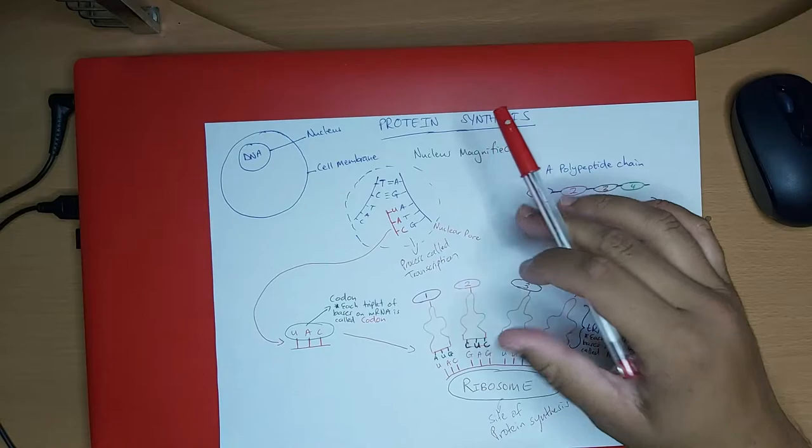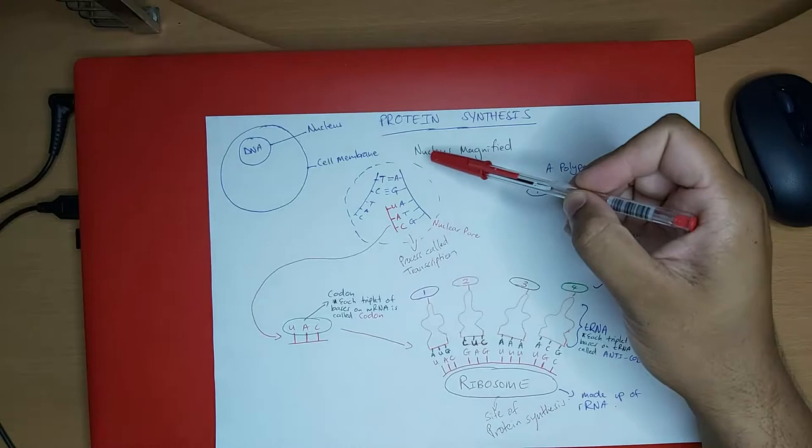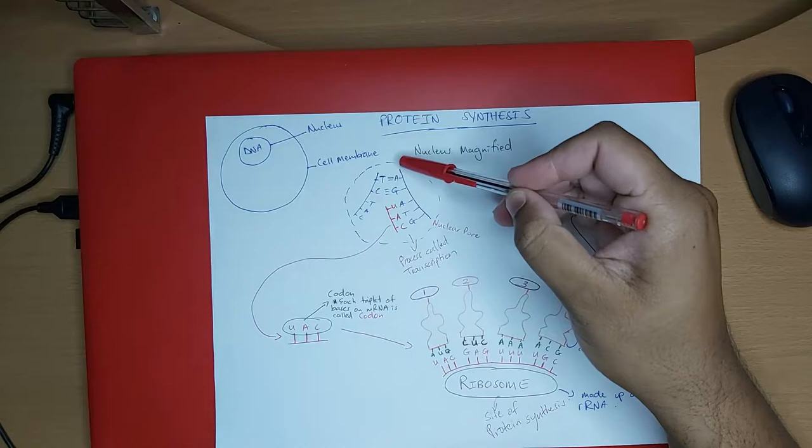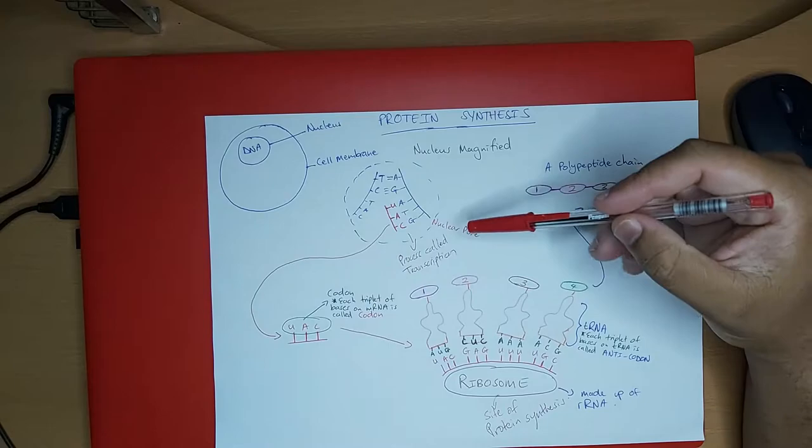Now we're going to zoom into the nucleus. Here I have drawn the nucleus — nucleus magnified. We can see that there are spaces in the nuclear membrane which are called nuclear pores. I will touch on the significance of the nuclear pores later in the video.